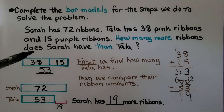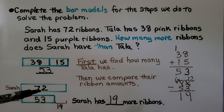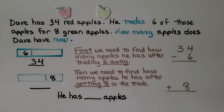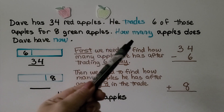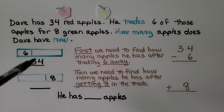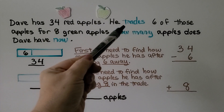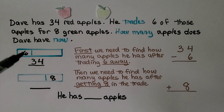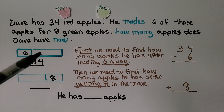To solve that problem, we needed to do addition first, then subtract. Now this problem says Dave has 34 red apples and he trades six of those apples for eight green apples. How many apples does Dave have now? We need to find how many he has now. He has 34, and when you trade something, you're giving it away and getting something back — so he's giving away 6. We need to know how many he has after trading away the 6, so we can do 34 minus 6.